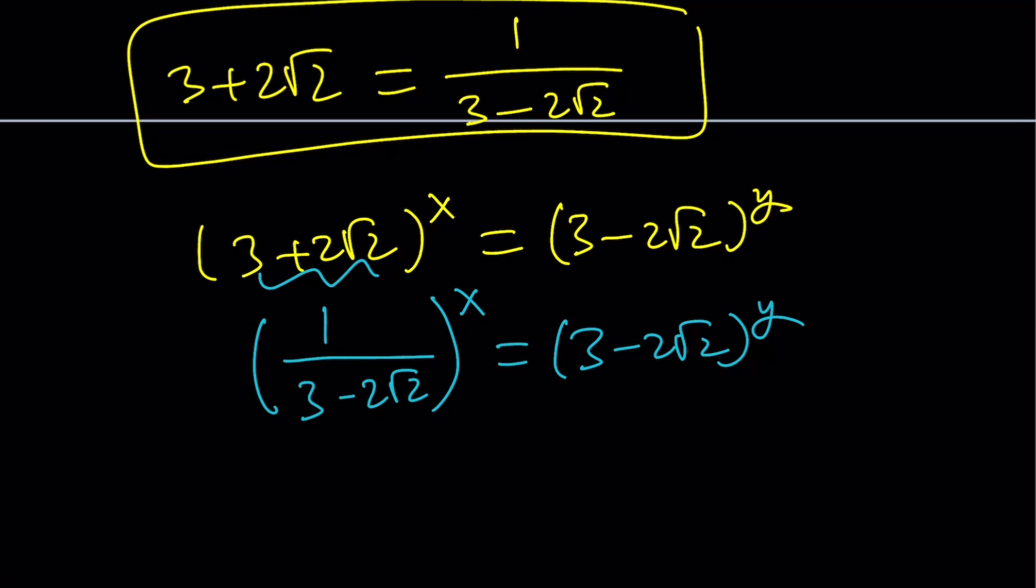What do I mean by that? Whenever you divide something like 1/a^n, that is the same thing as a^(-n). So we can write this as (3-2√2)^(-x). By flipping, you can negate the exponent. Negate the exponent, flip the base, and you're good.